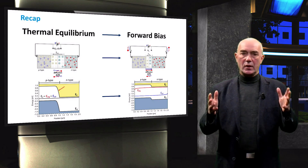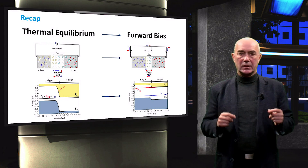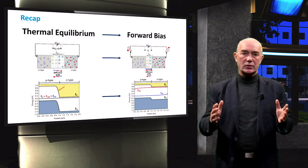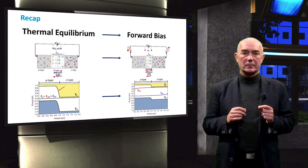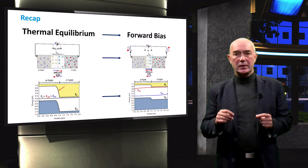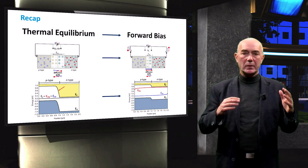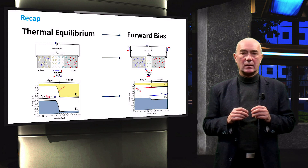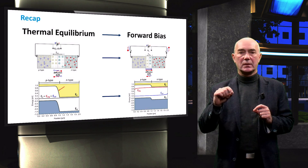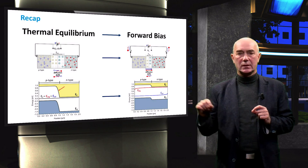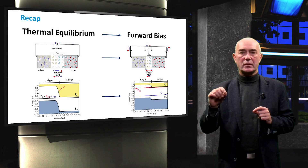We also saw how the band diagram of a PN junction is changed when the external forward bias voltage is applied. At thermal equilibrium, there is a large potential difference between the conduction band edge of the N-type and P-type material. As we apply a forward bias voltage, the difference between the band edges flattens and the potential difference across the depletion region lowers, allowing current to flow. The concentration of mobile carriers is described by two quasi-Fermi levels — one for electrons and one for holes — and a slope in their profiles indicates that current flows through the PN junction diode.